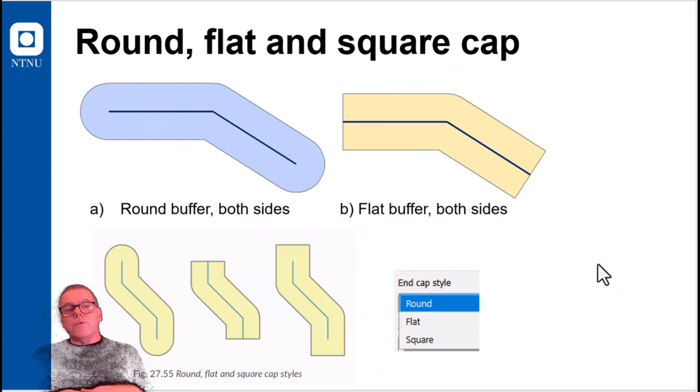Then also for linear features, you may have a parameter set to determine how you would have the end of the buffer. So should it be rounded, which is the default, or should it be a flat buffer?